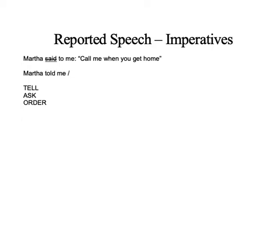So you say: 'Martha told me,' or 'Martha asked me,' or 'Martha ordered me.' Remember, every time we use a different connector word. In affirmative and negative we used 'that'; in the interrogative we used WH words like where, when, what, who, etc., or the words 'if' and 'whether.' Now here we are going to use always the same word — only one, very easy — which is going to be 'to.'